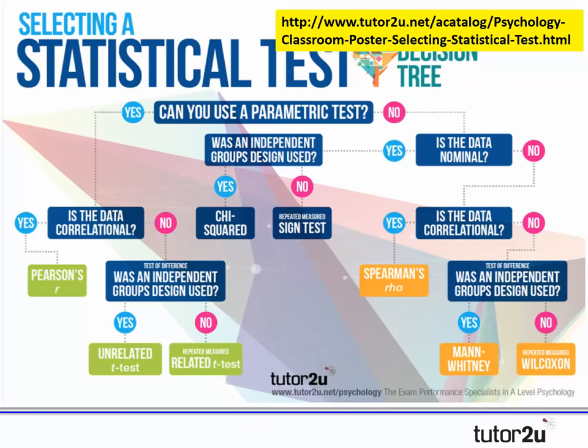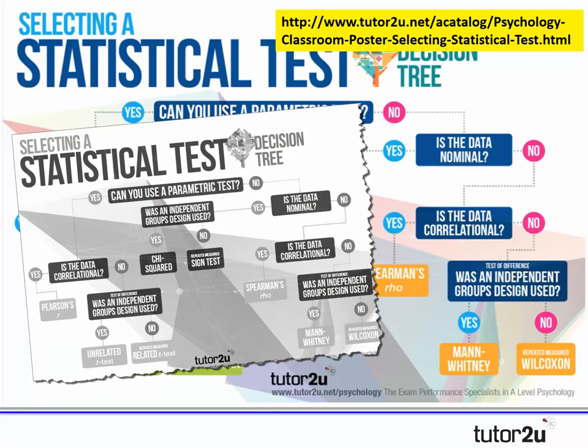As a quick reminder, we've created A2 decision tree posters that you can order free of charge from the tututu.net website store, sent directly to your school. You can order three copies for different classrooms. I've also created an A4 black and white version to print for students to put in the front of their folders, as this is definitely a resource you want all students to have access to all of the time.